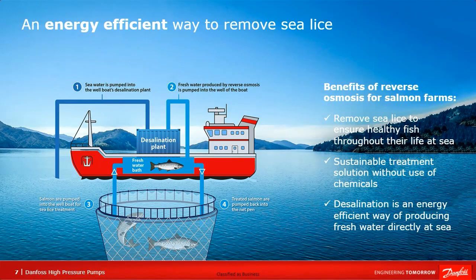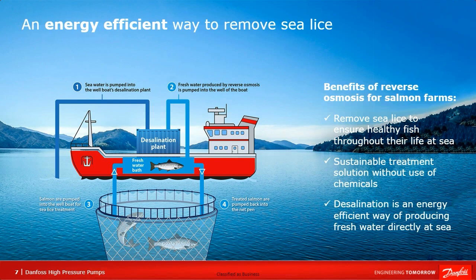With fresh water treatment, salmon are temporarily removed from the net pens and bathed in a fresh water bath. Sea lice cannot survive in low salinity water, so by getting the salmon into the fresh water bath the sea lice will detach from the salmon. This mimics the natural process where wild salmon swim upstream to spawn and in that process shed all the lice they carry.